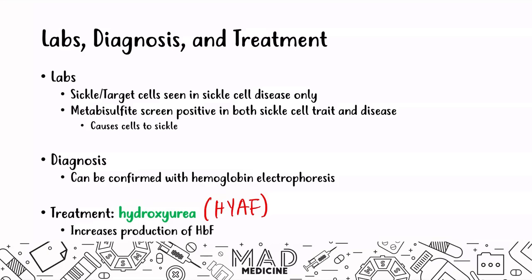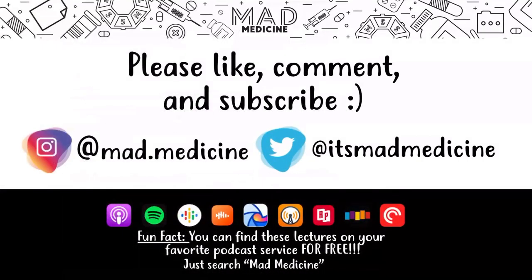Hydroxyurea is given to severe cases of sickle cell anemia and disease. That covers a lot of content — go through this lecture again until you are completely comfortable, because this is very high yield for Step 1. Thank you so much for watching.